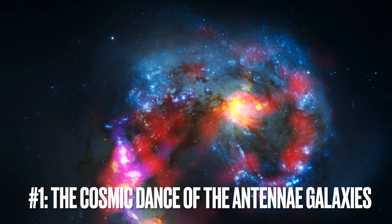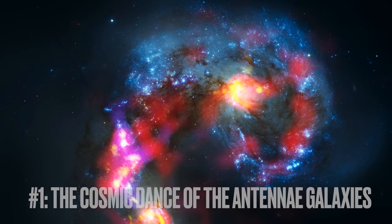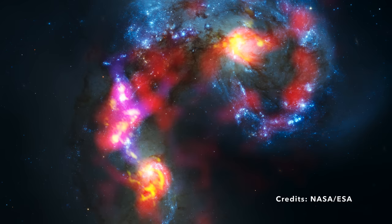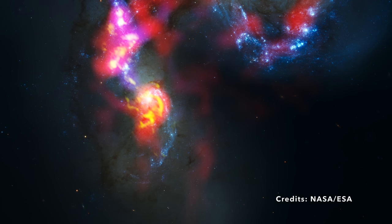Image number one: The cosmic dance of the Antenna Galaxies. In the grand ballet of the cosmos, few performances are as captivating as the intertwining dance of the Antenna Galaxies. Officially dubbed NGC 4038 and 4039, these galaxies paint a dramatic scene in the constellation Corvus the Crow. Situated approximately 75 million light-years from Earth, their gravitational embrace provides an awe-striking display.